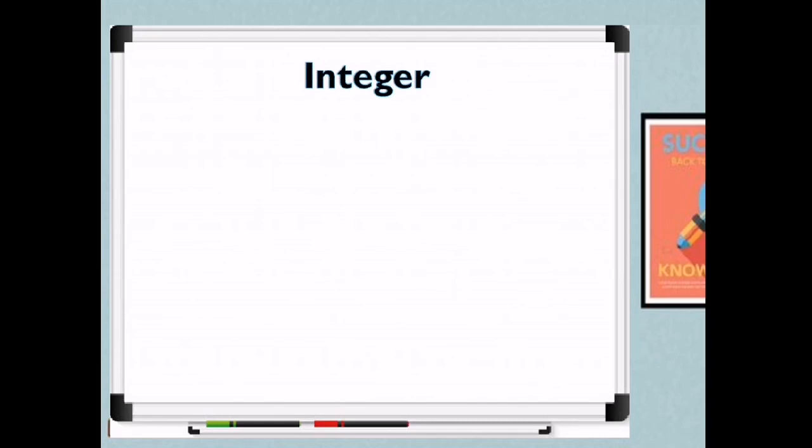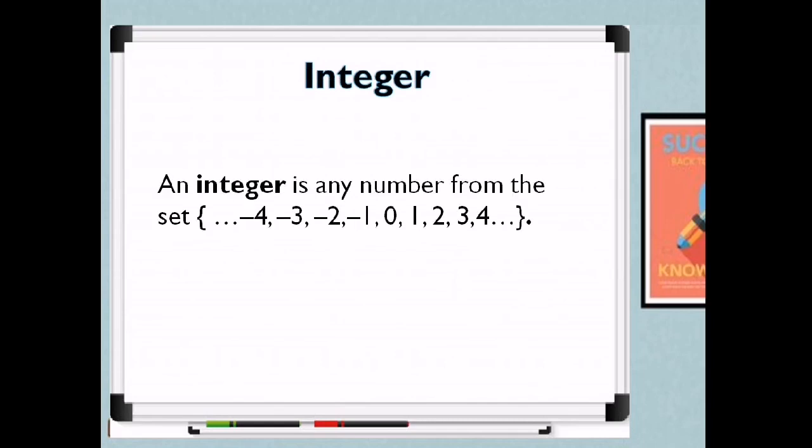What is an integer? An integer is any number from the set: ..., negative 4, negative 3, negative 2, negative 1, 0, 1, 2, 3, 4, ... So those are integers.